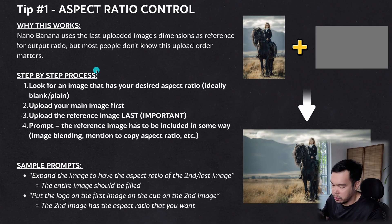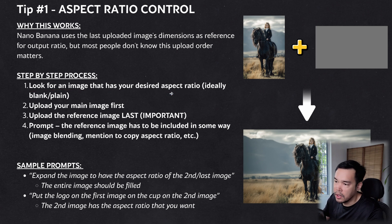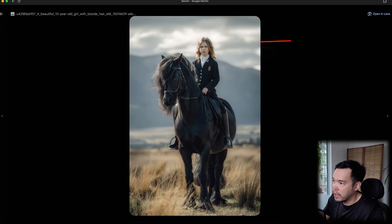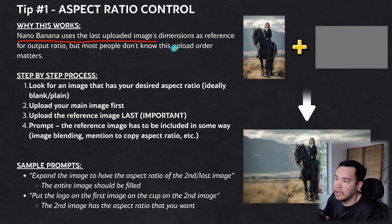Step by step, you look for an image that has your desired aspect ratio — ideally blank or plain so it doesn't add unwanted elements. Then upload the main image first, the one you want to expand. Then upload the reference image last. This is important because Nano Banana uses the last uploaded image's dimensions as reference.